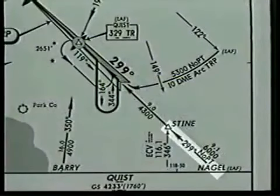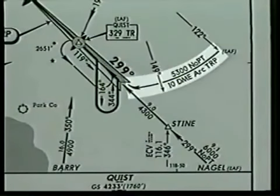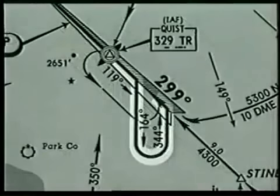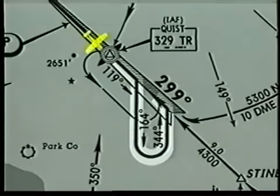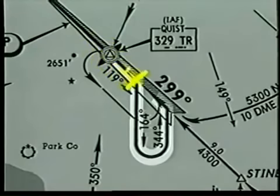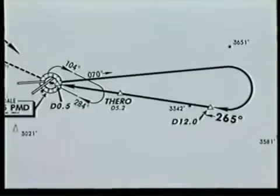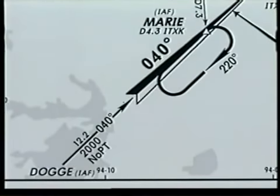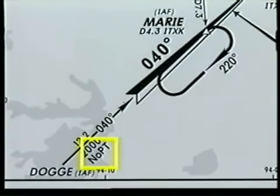An initial approach segment is shown extending from each of these IAFs. If a procedure turn is authorized, it is depicted on the plan view. When this type of symbol is used, you may reverse course any way you desire as long as you stay within protected airspace. You must also stay at or above the minimum altitudes and within the distances shown on the profile view. However, some course reversals are not optional. When a procedural track is charted, such as a teardrop or holding pattern, you must fly the procedure exactly as shown unless you're being radar vectored. Where the notation no PT appears, a procedure turn is not required or authorized.